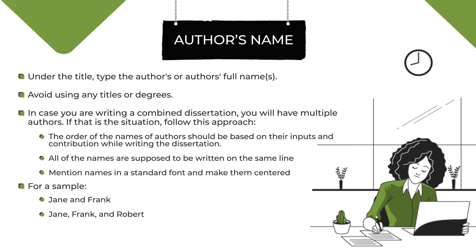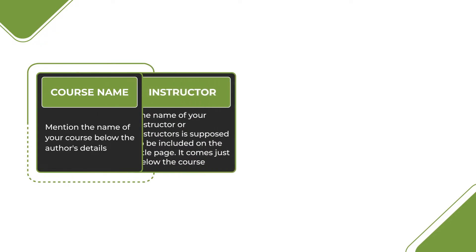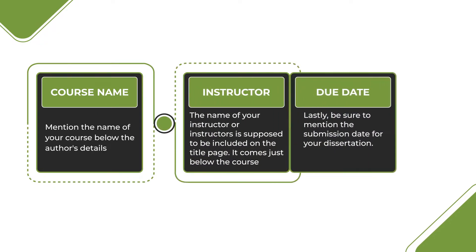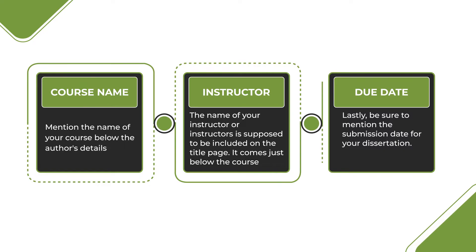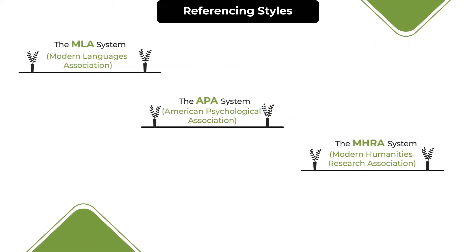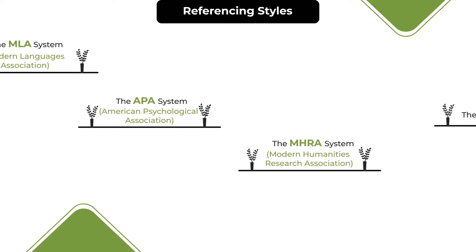Your name should be written in the specific referencing style used throughout the document. For the course name, remember to mention the course number on the next line. The instructor's name should appear just below the course name and number. Lastly, the date has to be mentioned at the end and must include the month, date, and year.